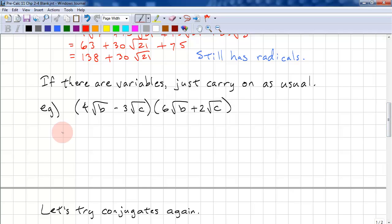So what happens if we have variables? 6 times 4 is 24. Square root b squared. Outer. 4 times 2 is 8. And we have b times c in the radical. Here we have minus 3 and 6. So that's minus 18. And again, we have b and c. And finally, negative 3 times 2 is negative 6. And square root c squared. We have like terms here. Simplify. 24 times absolute value of b. We have like terms here. So 8 minus 18 is minus 10 root bc. And finally, minus 6 absolute value of c.